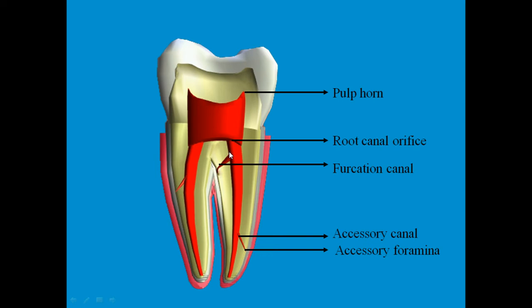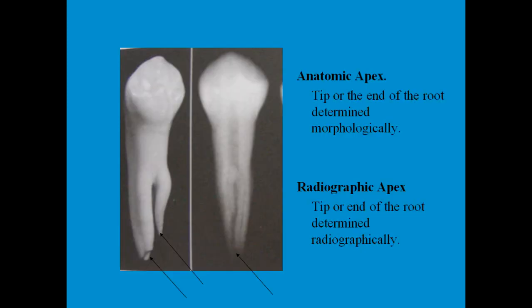There are also extensions of the pulp found in the root canal. When these extensions are found near the furcation, they are called furcation canals. When found near the apical portion of the root, they are called accessory canals. These canals open out to the periapical or periodontal area — those openings are called the apical foramen and accessory foramina, all of which must be completely sealed during obturation.